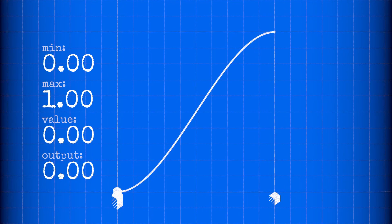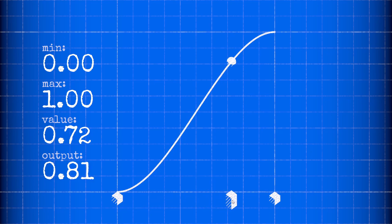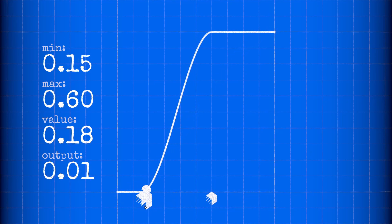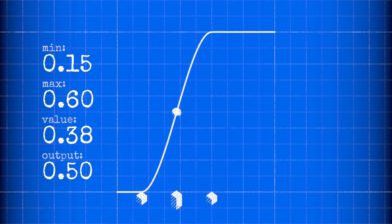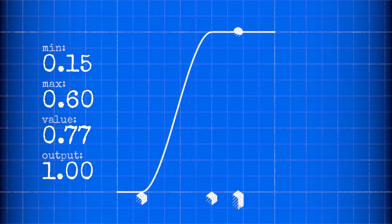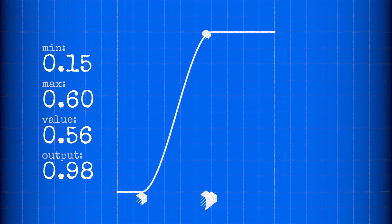SmoothStep is called a sigmoid function — that is, its output curve is shaped like an S. It takes in three arguments: a minimum edge, a maximum edge, and a value, and always returns a number between 0 and 1.